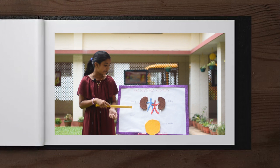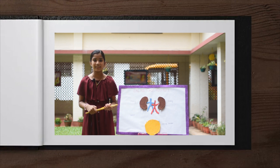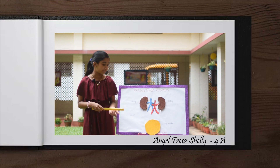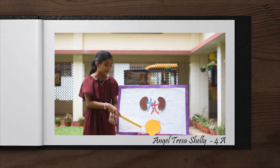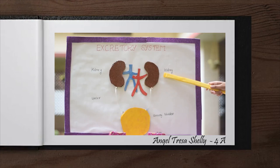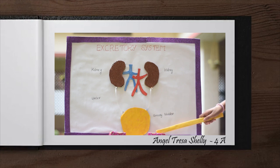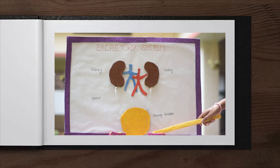This is the model of the excretory system of a human being. The excretory system helps your body get rid of all the waste produced by the body. The process by which waste is removed from the body is called excretion. The human excretory system consists of a pair of kidneys, ureters, urinary bladder, and urethra. Kidneys filter waste, harmful substances, and excess water from the blood to form pale yellow urine. The urine passes through the ureters and reaches the urinary bladder, then comes out through the urethra — a thin tube that sends urine out of the body.